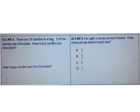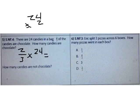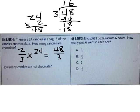There are 24 candies in a bag. Two thirds of the candies are chocolate. How many candies are chocolate? I need to multiply 2/3 times 24. What's 2/3 times 24 written as an improper fraction? 24 times 2 is 48, so I have 48 over 3. Now I can divide to change that into a whole number. What's 48 divided by 3? 3 goes into 4 one time and 3 goes into 18 six times. So my answer is 16. 16 of the candies are chocolate.